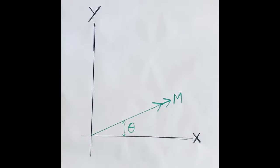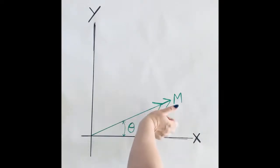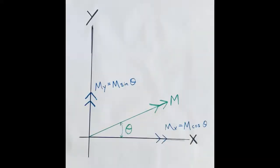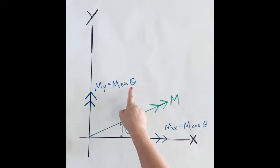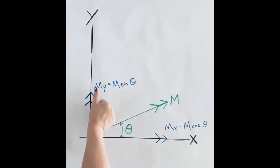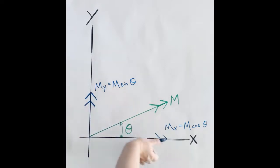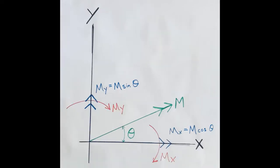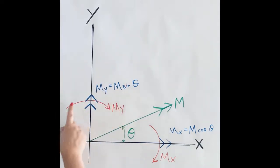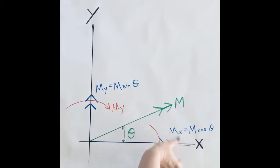Here we have a moment acting at angle theta from the positive X axis. The double arrow represents a torsional vector — put your thumb in that direction to see the sense of the moment. Breaking it into components: moment X is M cosine theta (adjacent to theta), and moment Y is M sine theta (opposite vertical component). Using the right-hand rule, moment Y with thumb pointing up gives compression on the right and tension on the left, while moment X with thumb pointing right gives compression on the bottom and tension on the top.